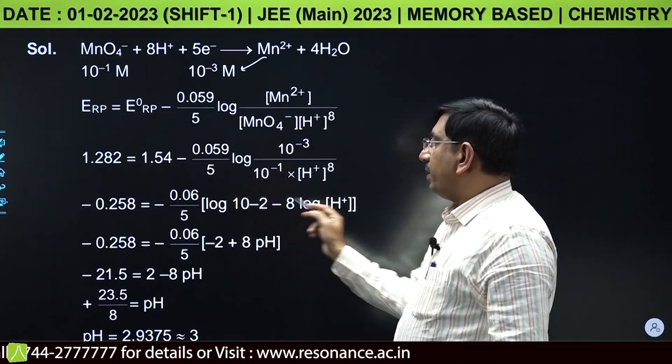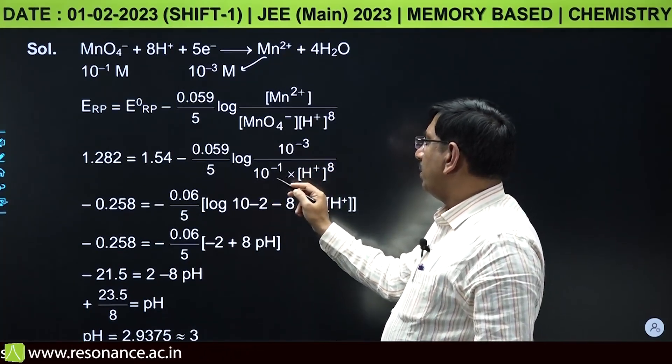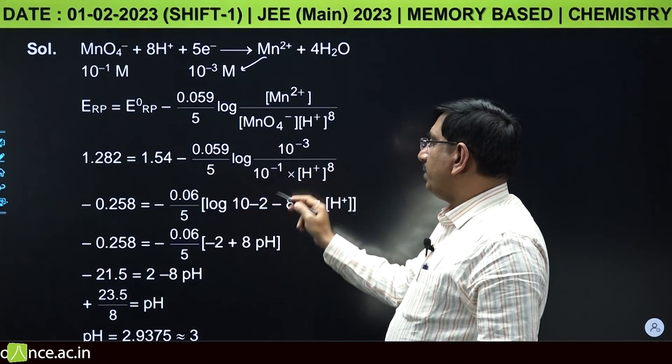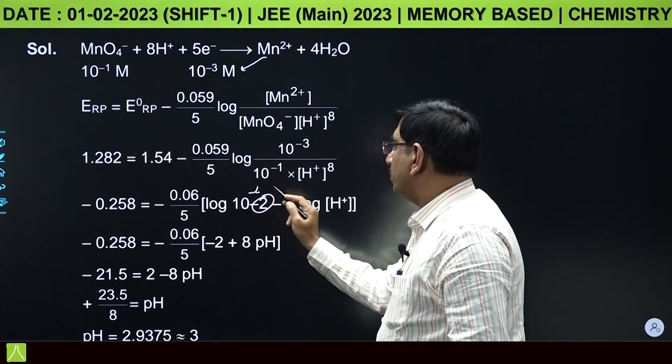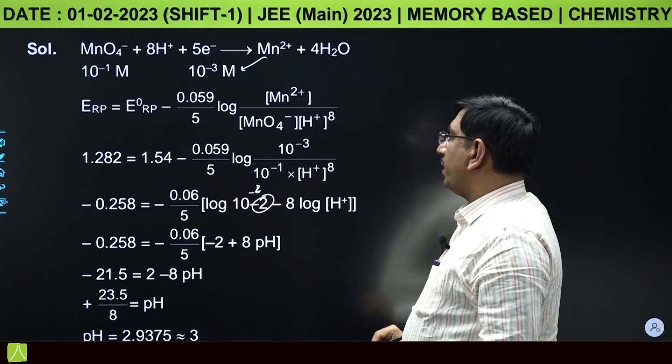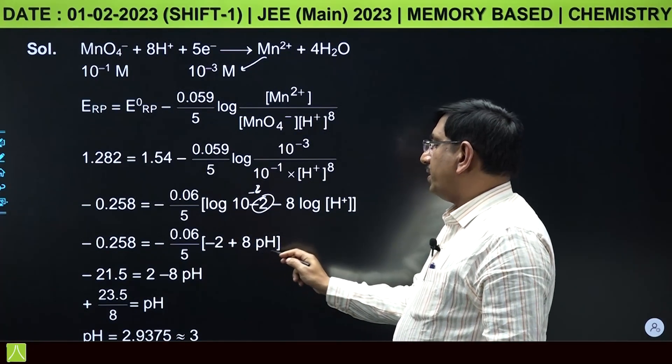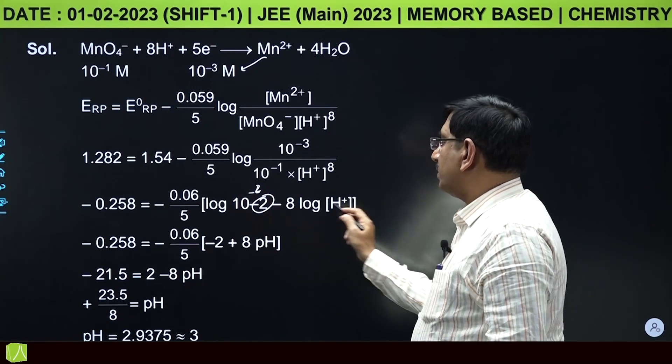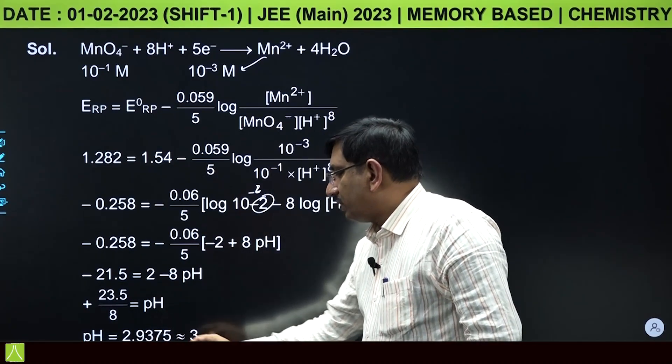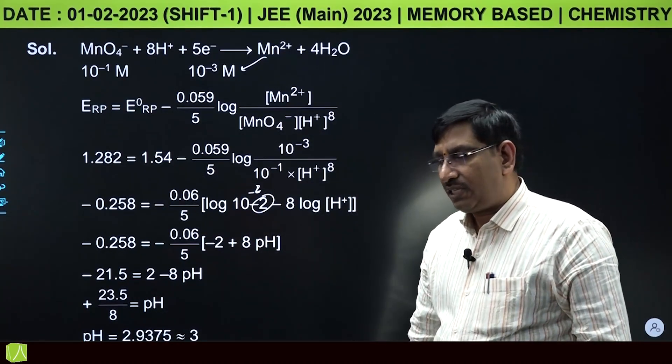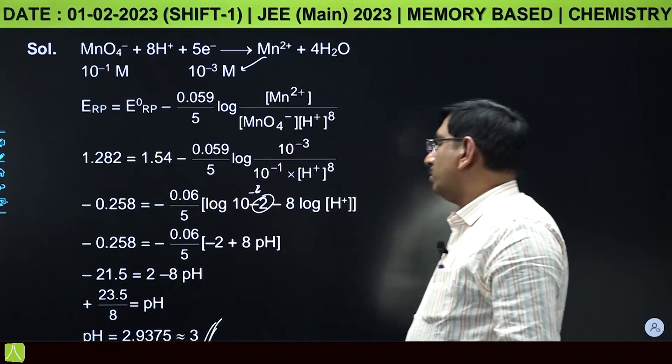This becomes log(10-3/10-1) and H+ concentration power 8. That's log(10-2) and -8 log[H+], which is -2 + 8pH. On solving you get pH = 2.9375, rounded off to 3. Answer is 3.